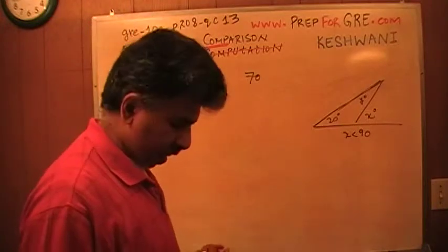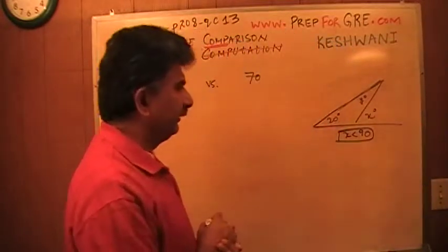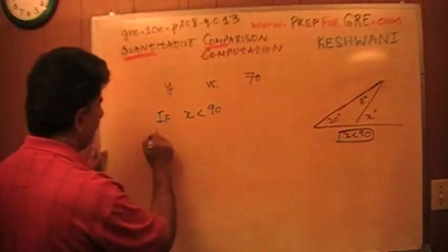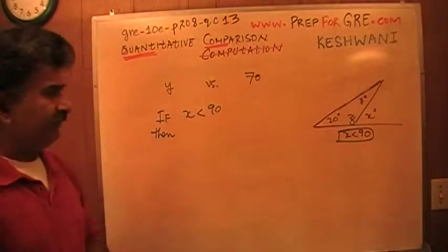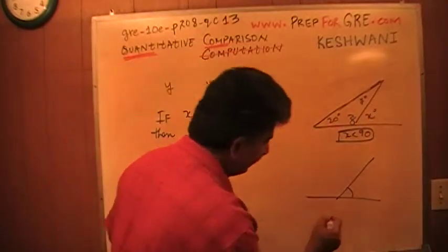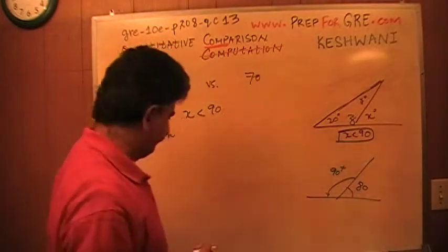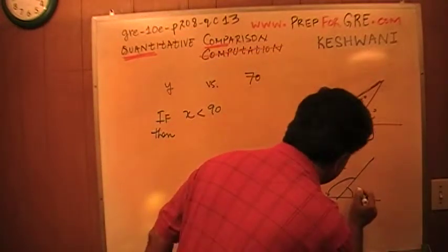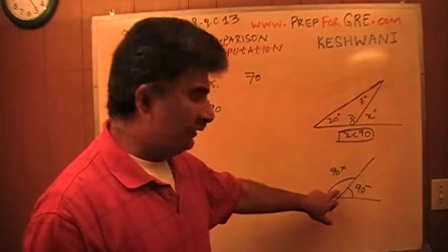They tell us the important piece of information is that X is less than 90. Well, if X is less than 90, then this guy here, let's call it Z. If I tell you that this is less than 90, let's say this is 80, then this guy has to be more than 90. If this angle is less than 90, then this angle has to be more than 90.